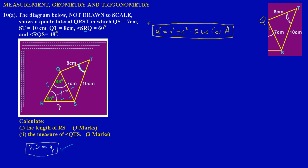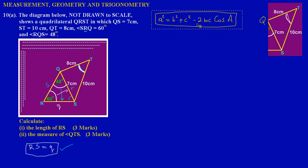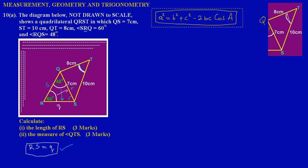Now in this case, the triangle they gave us is not labeled ABC, so I'm going to improvise. Since they want us to find the angle at T, we're going to be finding cos(T). That means the side little t must be the subject. This side here would be little t, this side would be little q, and this side would be little s.